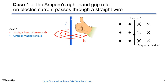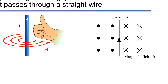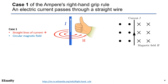Here is more explanation for case 1. This is a current passing through a straight wire. We can put the three-dimensional illustration into two dimensions. On the right-hand side of the conductor with current I, the magnetic field goes into the paper plane, which is annotated as a cross. On the left side of the conductor, the magnetic field comes out of the paper plane, annotated as a dot. Note that the magnetic flux density B is in the same direction of H in this case.